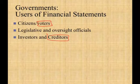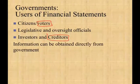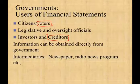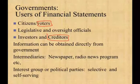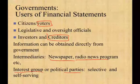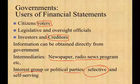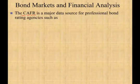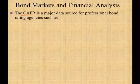You can get financial statement information directly from the government — ask them for their CAFR report, which we looked at previously. You could also look at intermediary sources like newspapers, radio, or news programs on the internet. Or you can get information from interest groups or political parties. But be careful: newspapers, radio shows, and political parties may highlight certain things and ignore others to serve their own purpose. The best way is to go directly to the source and ask for the CAFR — the Comprehensive Annual Financial Report.